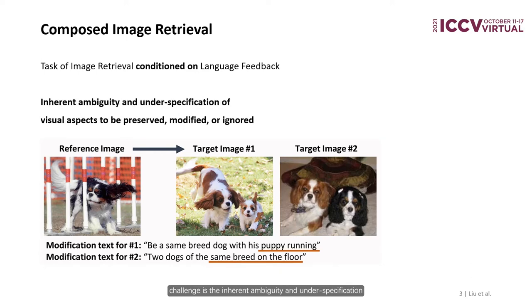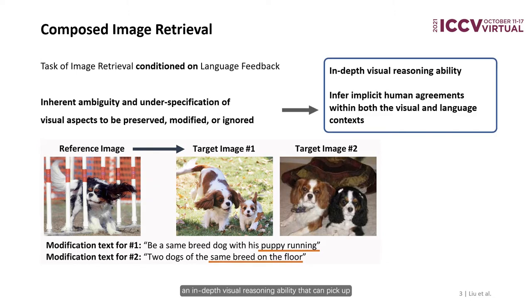The challenge is the inherent ambiguity and underspecification of visual aspects to either be preserved, modified, or ignored, which requires an in-depth visual reasoning ability that can pick up implicit human agreements within both the visual and language context.